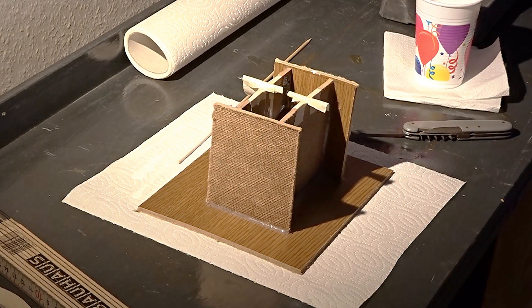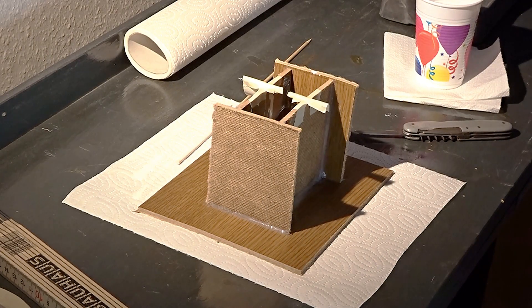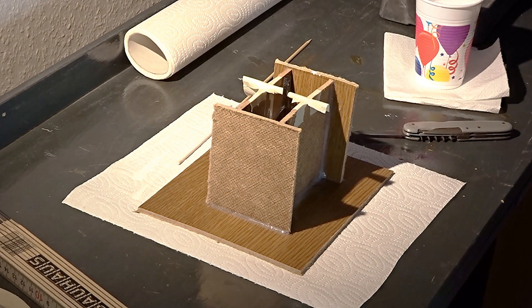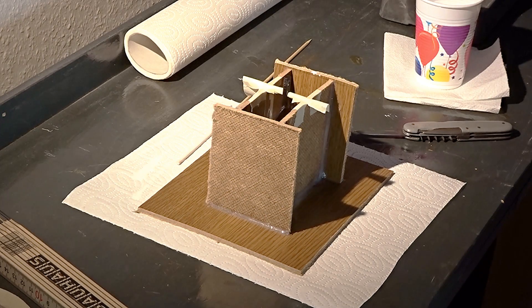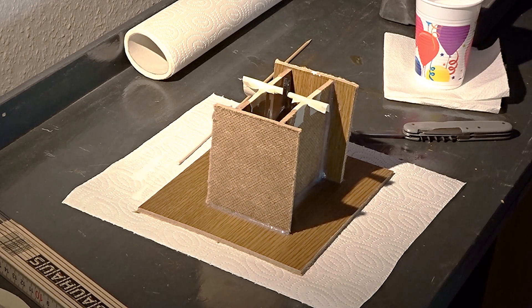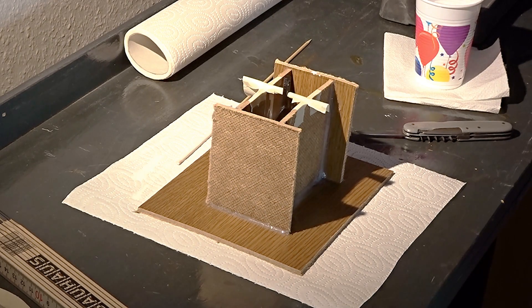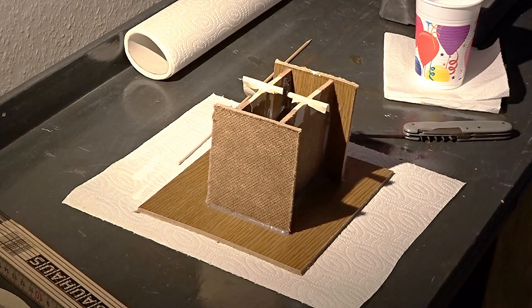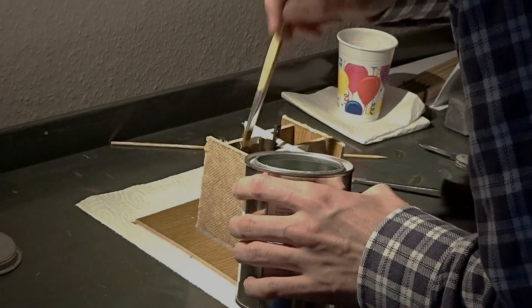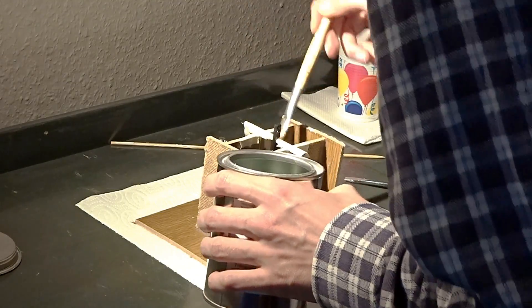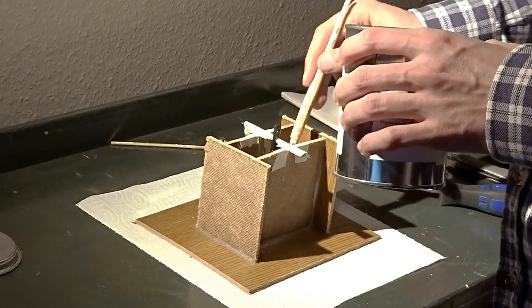I drilled a small hole into the handle I added to the shape before and put a nail through. Then I put the whole thing into the notches I put into the box before and secured it with some tape. After waiting some time until the stuff is hardened, you have basically finished the lower half of the mold.